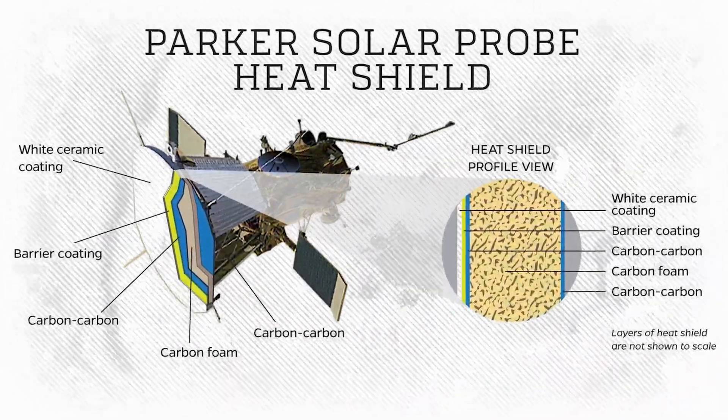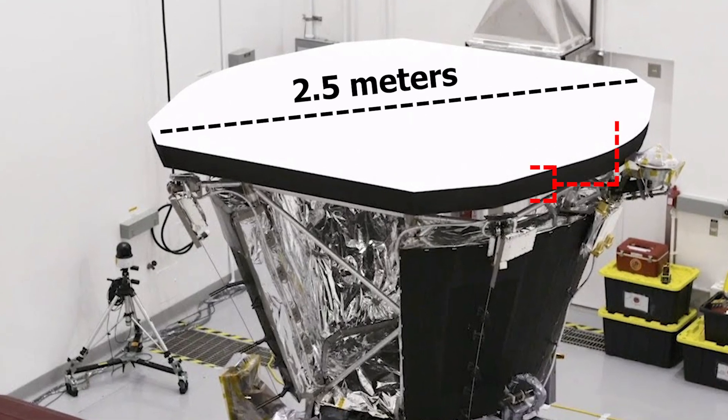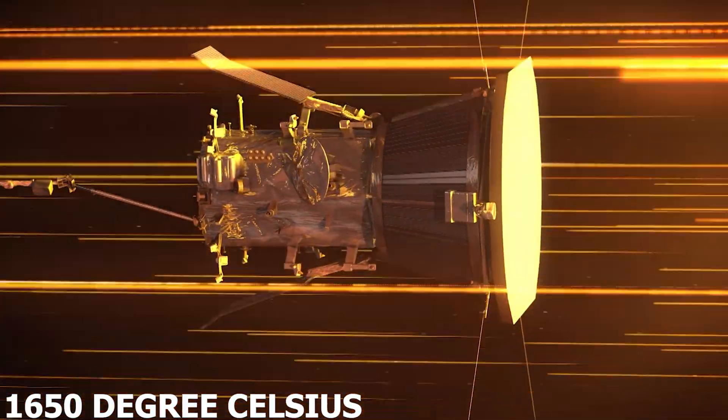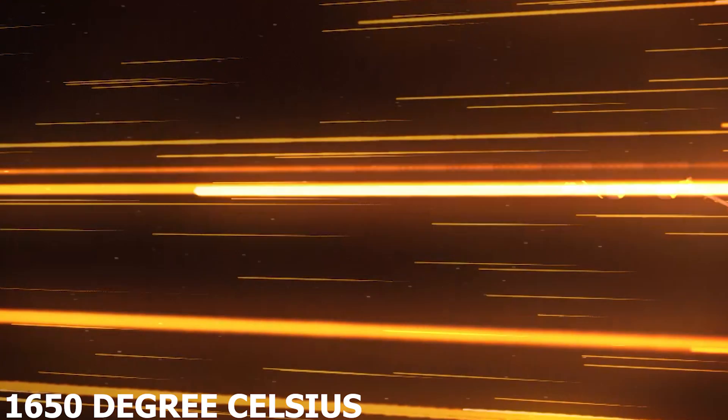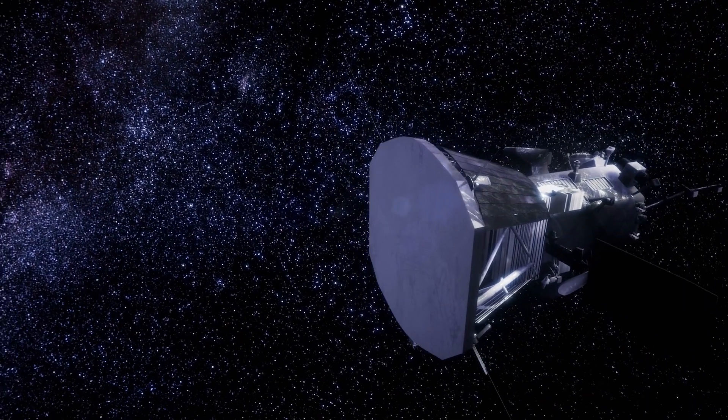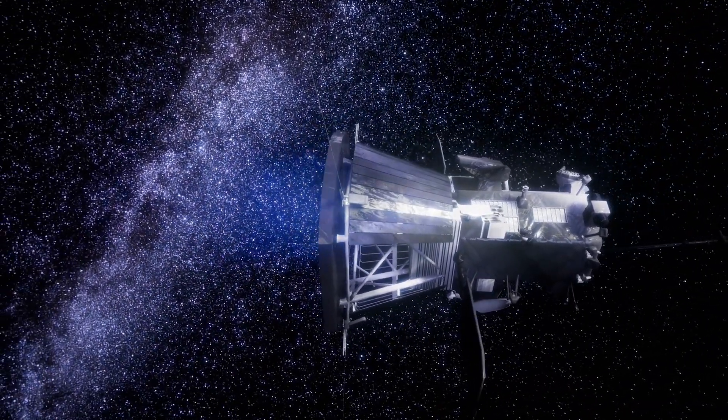Despite its thin design, with a diameter of 2.5 meters and a thickness of 4.5 inches, the shield is capable of withstanding temperatures up to 1650 degrees Celsius. The shield is designed to keep the temperature of the Parker Solar Probe within 30 degrees Celsius, ensuring that the spacecraft remains fully protected.